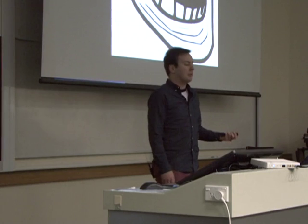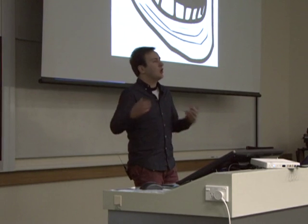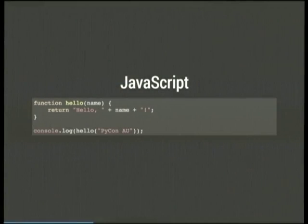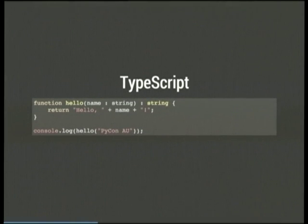If you want to start seeing the differences, you have to write more complicated code. Here is a slightly more interesting function that takes a string parameter and returns a string. This is the TypeScript version of that — there is a type hint on the input parameter and a type hint on the output, both saying it is a string. If you call this function with something that is not a string, it will break. And if you try to assign the output to something that isn't expecting a string, that will also fail.